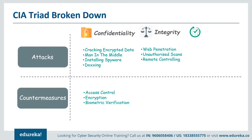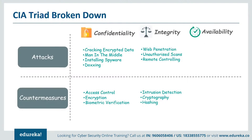When thinking about availability, you should be aware of denial of service and distributed denial of service attacks, where an enemy floods your computer and internet connection with traffic so legitimate users can't access information on the website. Other attacks include ransomware, which encrypts data on targeted computers so authorized parties cannot use it, and deliberately disrupting a server room's power supply so servers go offline. Ways to protect yourself from these attacks include using antivirus software, installing spyware detection and removal software, and using a firewall.